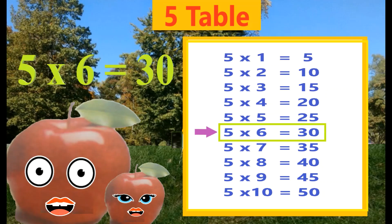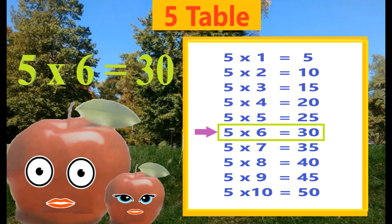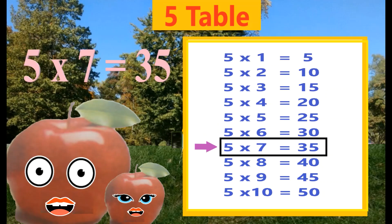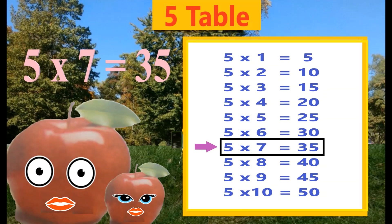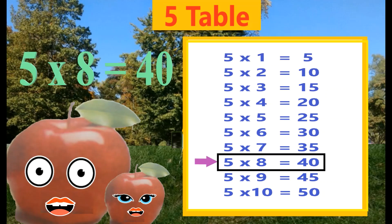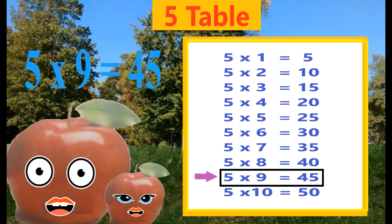5 6's are 30. 5 7's are 35. 5 8's are 40. 5 9's are 45.